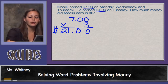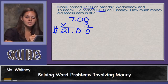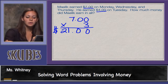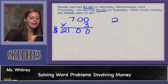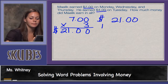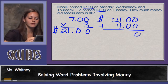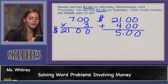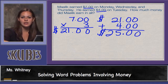The problem also tells us that he earned four dollars on Tuesday. So to find the total amount we need to add twenty-one dollars plus four dollars. We always carry our decimal down, so Malik earned a total of twenty-five dollars.